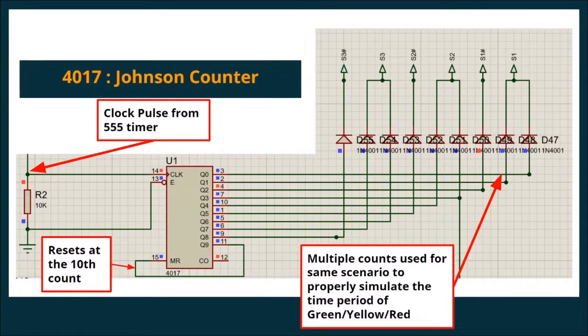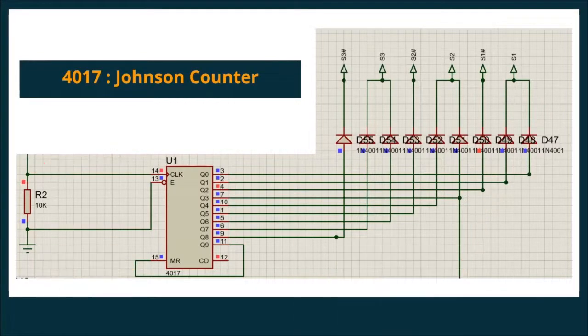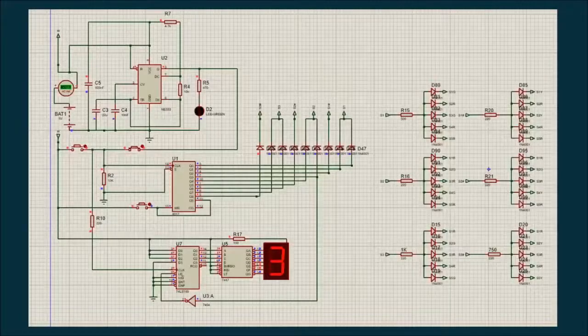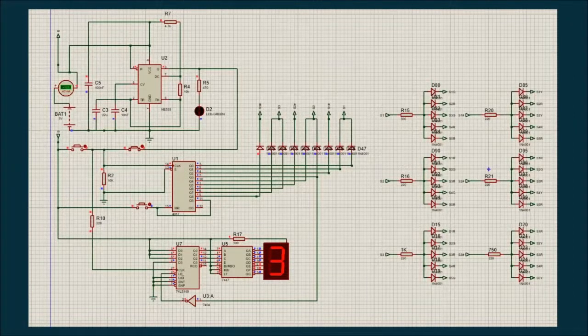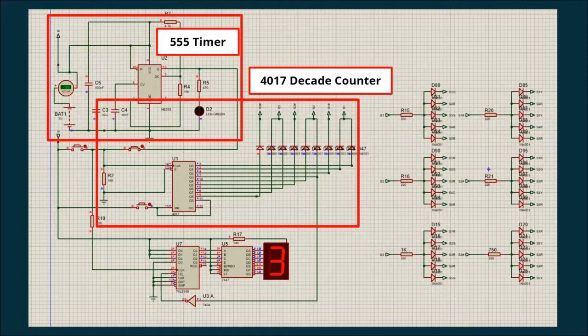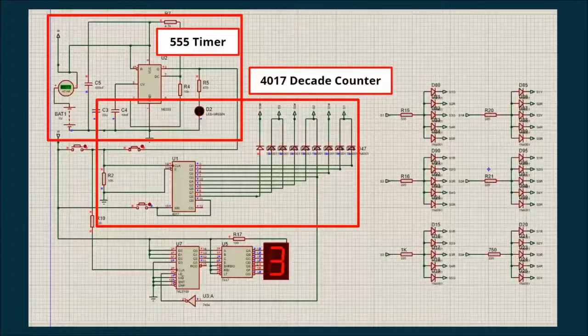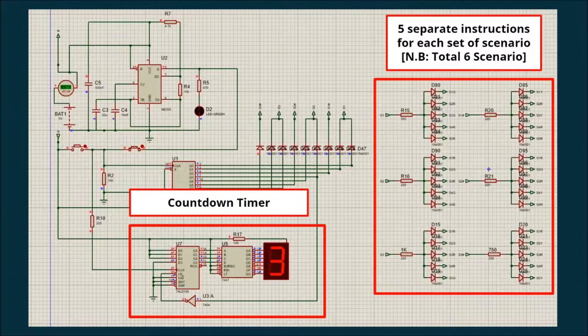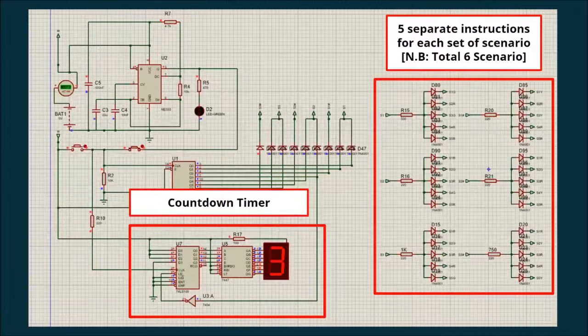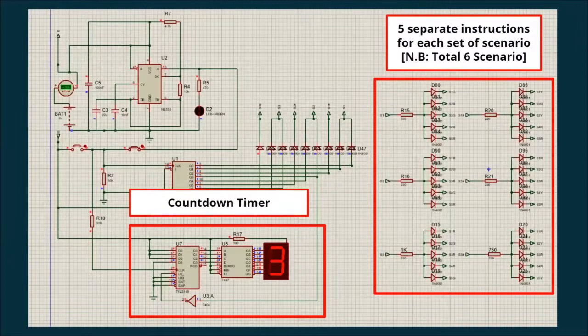Thank you. I am Jobar Ahmed, ID 1706099. Here, we can see an overview of our software part of our project. On the top, we can see the 555 timer. In the middle, we have our 4017 decade counter. In the bottom side, we can see our countdown timer. In the right side, we see a series of diodes being connected together to recreate the various combinations and scenarios that we will have to simulate to get the correct lighting for individual roads.